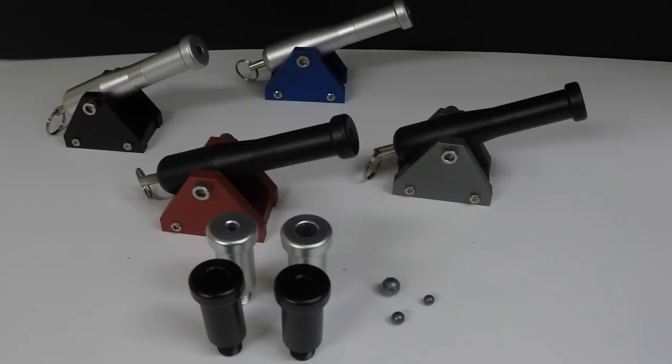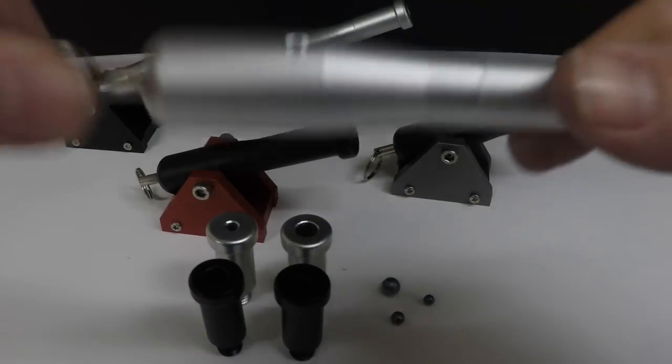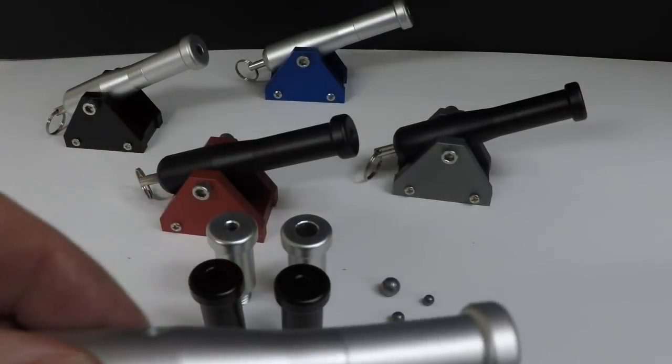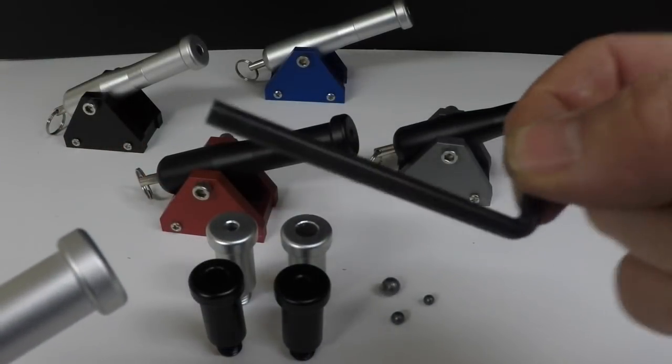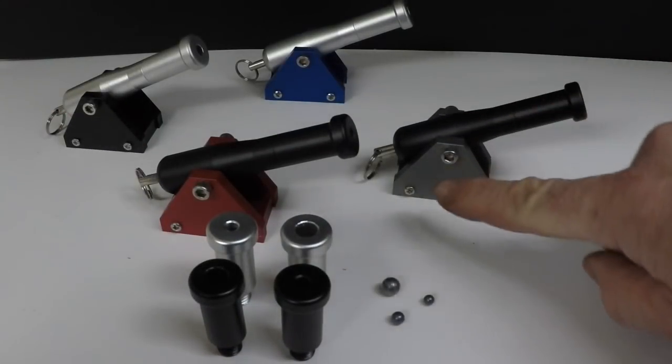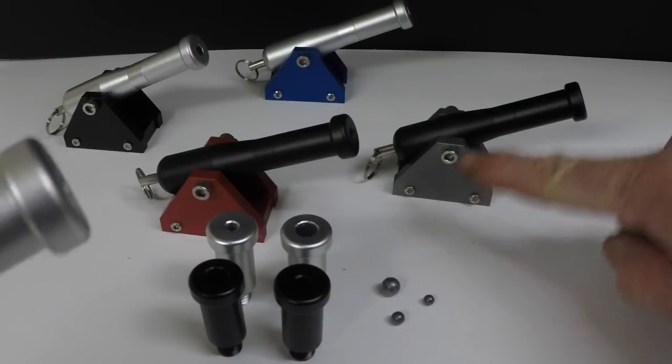We're going to start out with the 22 caliber since it's the one that comes standard on the trigger cannon. The 17 and 30 are optional barrels. So you take your barrel off the carriage, you'll use your Allen wrench, four millimeter Allen wrench, which takes the screws off each side of the carriage. Very simple to do.